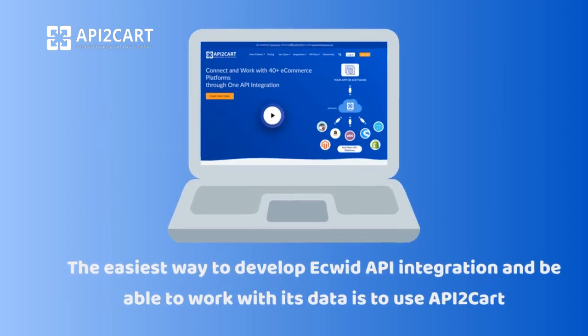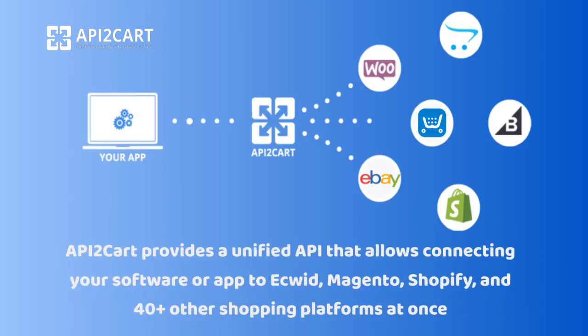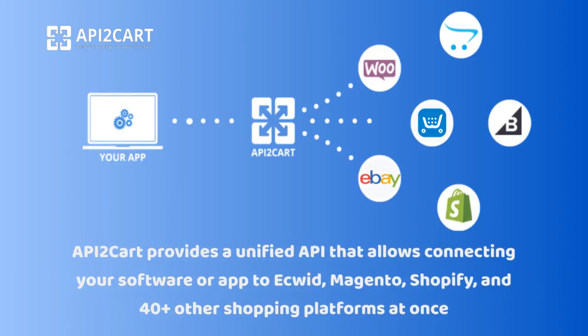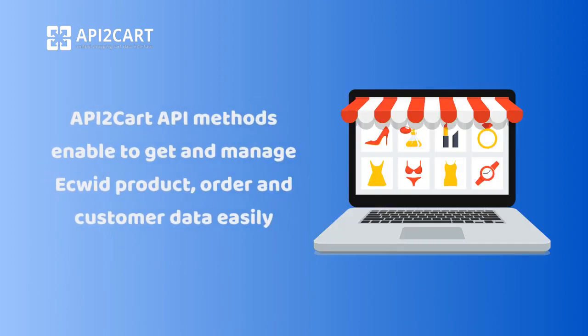The easiest way to develop Equid API integration and be able to work with its data is to use API2Cart. API2Cart provides a unified API that allows connecting your software or app to Equid, Magento, Shopify, and 40-plus other shopping platforms at once. API2Cart API methods enable you to get and manage Equid product, order, and customer data easily.